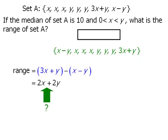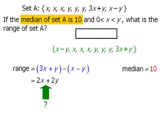So our ultimate goal here is to find the value of 2x plus 2y. To do this, we should use the piece of information that tells us that the median of set A is 10. Now since set A has an even number of values, the median will be the average of these two middle values. So the median will be x plus y divided by 2, and this we are told is equal to 10.